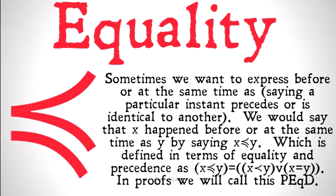You can't have two instants that happen at the same time that are in some way different or distinct. That's all we mean by two instants happening at the same time — just that they are identical to one another.